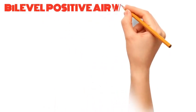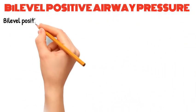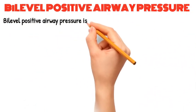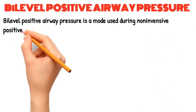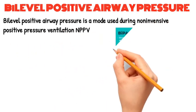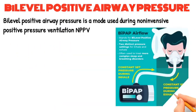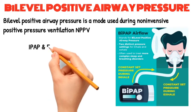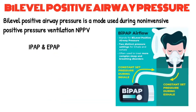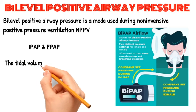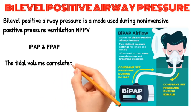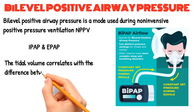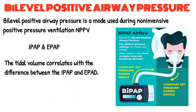Bi-level positive airway pressure (BiPAP) is a mode used during non-invasive positive pressure ventilation. It delivers a preset inspiratory positive airway pressure (IPAP) and expiratory positive airway pressure (EPAP). The tidal volume correlates with the difference between the IPAP and EPAP.